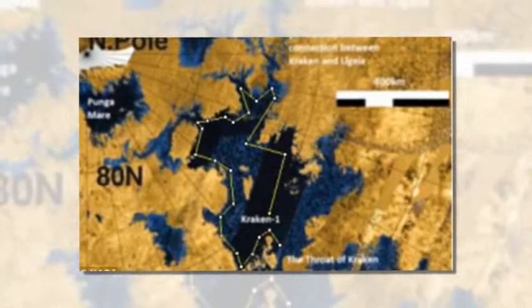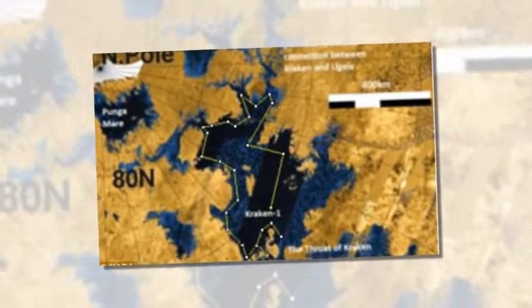NASA's conceptual Titan submarine would weigh about 1 ton (2,200 pounds) and would use conventional electric propulsion over a night.